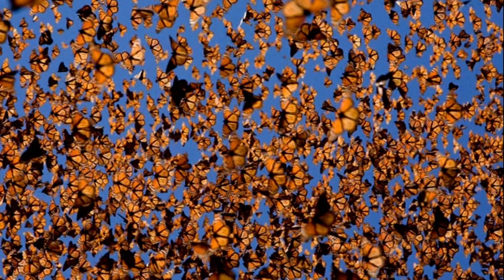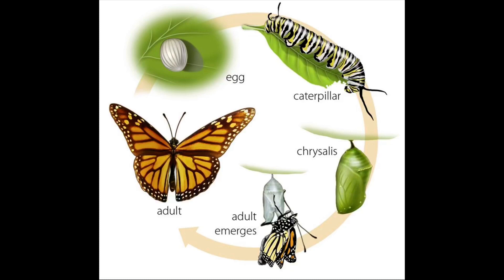Butterflies do not live for a very long time — many live for just about one month, and some for just a matter of days. However, a few, such as the monarch butterfly, can live for almost a year and migrate thousands of miles in the fall. Migration is when an animal moves from one place to another, usually in search of warm weather. During their lifetime, butterflies help to pollinate our flowering plants. Being cold-blooded and preferring warm weather, we see them only in late spring and summer in the northern hemisphere, but they are a beautiful sight in our gardens and parks.